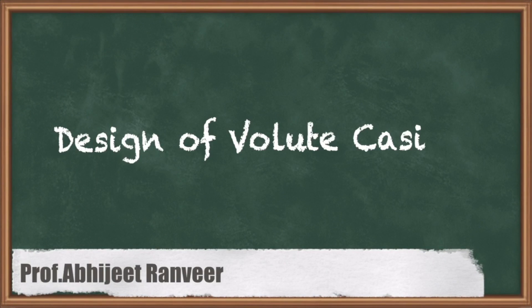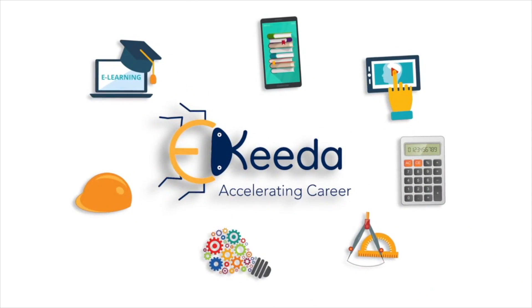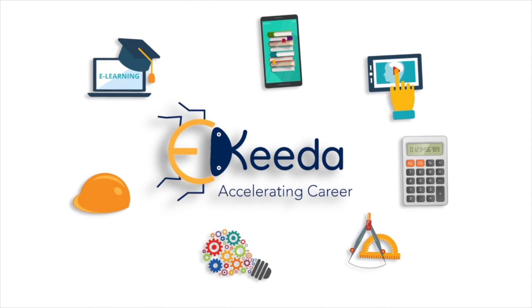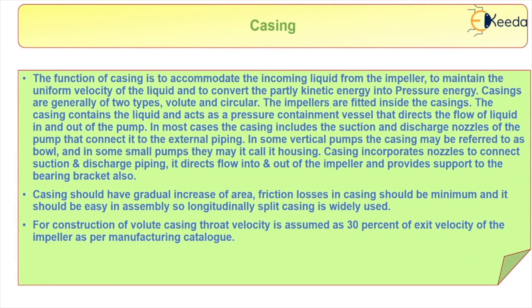In this video, we will discuss about the casing. The function of casing is to accommodate the incoming liquid from the impeller, to maintain the uniform velocity of the liquid, and to convert the partly kinetic energy into the pressure end.